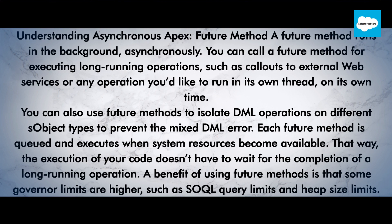Understanding Asynchronous Apex Future Method. A future method runs in the background asynchronously. You can call a future method for executing long-running operations, such as callouts to external web services or any operation you'd like to run in its own thread, on its own time. You can also use future methods to isolate DML operations on different subject types to prevent the mixed DML error.